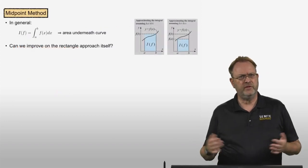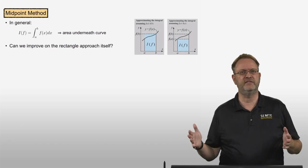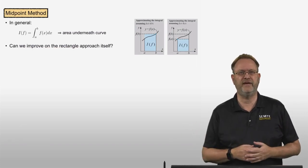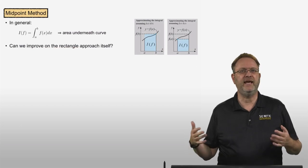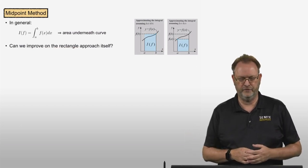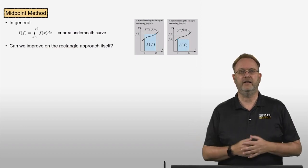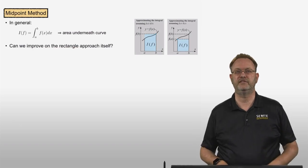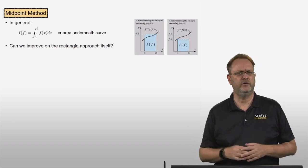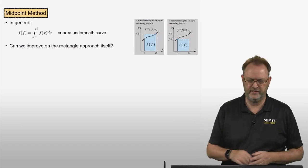Let's start with the midpoint method. As a reminder, in the general case if we want to integrate a function f, what we are geometrically calculating is the area underneath the curve. In a prior video we looked at the rectangle method. The question is: can we improve on the rectangle approach itself, not by going directly to a composite method, but by improving the rectangle method directly?